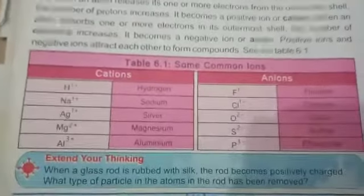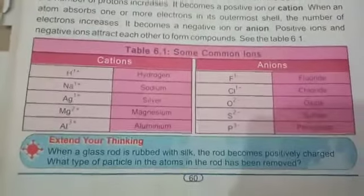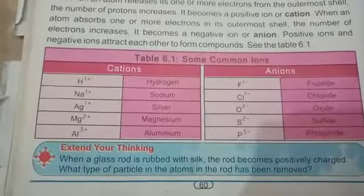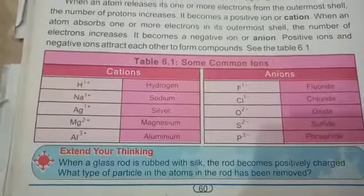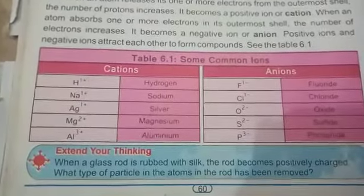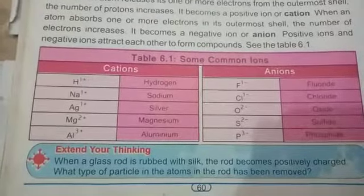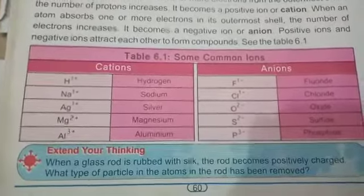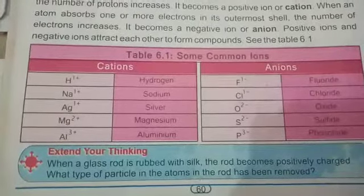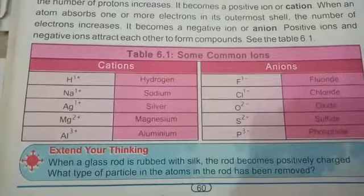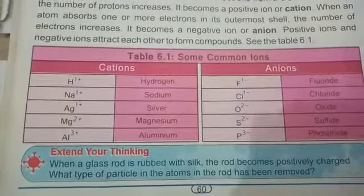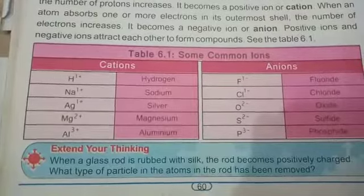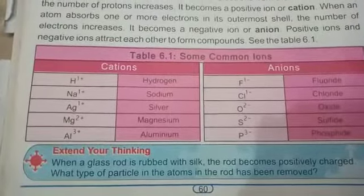In the table, some examples of cations and anions are given. Cations have a positive charge while anions have a negative charge. The amount of charge depends on how many electrons have been lost or gained by an atom.